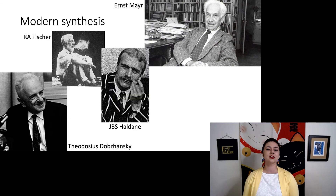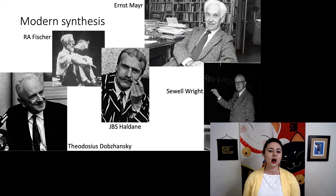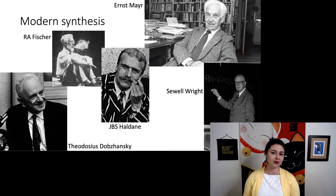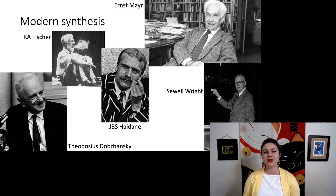The modern synthesis happened in the 1940s, and the key figures include Ernst Mayr, Theodosius Dobzhansky, R.A. Fisher, J.B.S. Haldane, and Sewell Wright. What happened is that people trained in both mathematics and biology began working together, because part of the problem with evolution is that it happens at the population level. You need to be much more sophisticated with math — dealing with statistics and summary measures rather than looking at a single individual. It is a lot more complicated, and that's part of the reason this took so long.